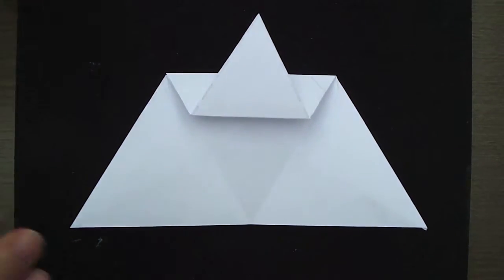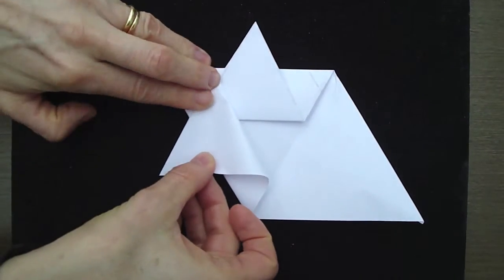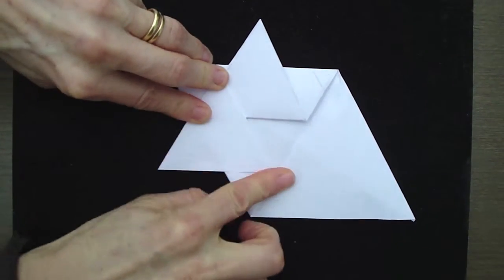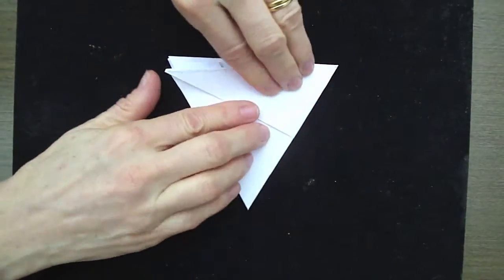Do exactly the same on the bottom left hand corner. Fold it back over and then fold half of it back until you have a little point sticking out. Then finally do it again for the right hand side.